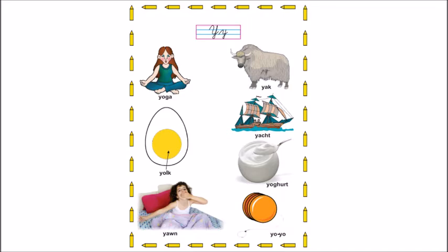Y, yacht. Y, yogurt. Y, yo-yo. And children, look at the border. What do we have? We have a pencil and what is the color of the pencil? Yellow. Y, yellow.